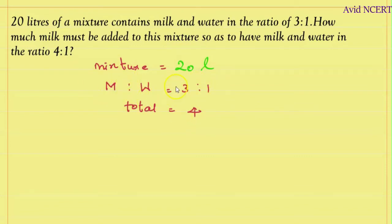To find the amount of milk, the formula is: milk equals the total amount of mixture (20) times the part of milk (3) divided by the total parts (4). Simplifying this: 5 times 4 is 20, 5 times 3 is 15, which means 15 liters of milk.